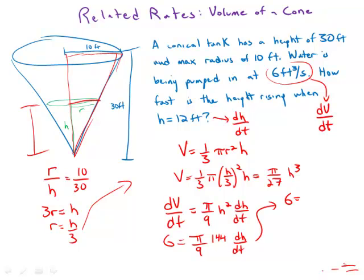Simplifying: 144 divided by 9 is 16, so 6 equals 16 pi times dh/dt. Dividing both sides, dh/dt equals 6 over 16 pi, which simplifies to 3 over 8 pi. That is the rate at which the height is rising.